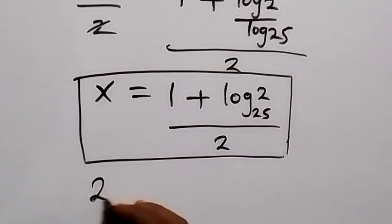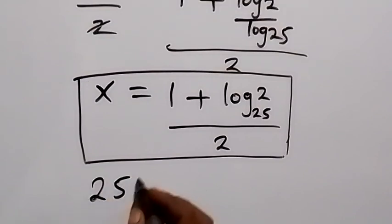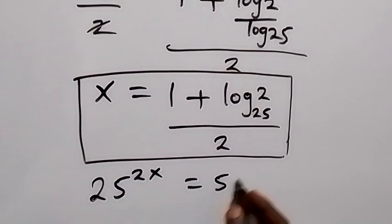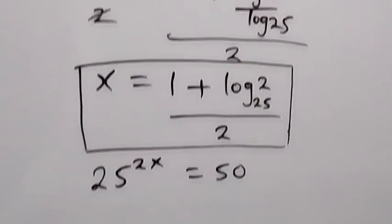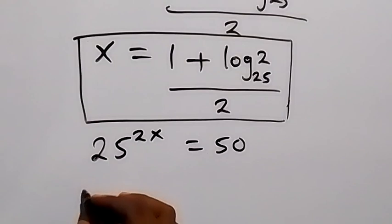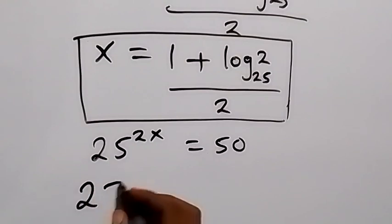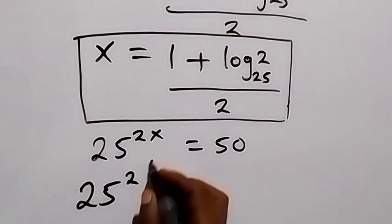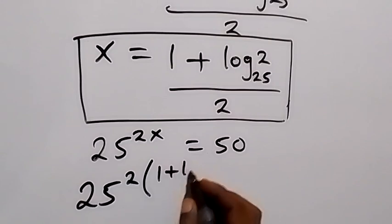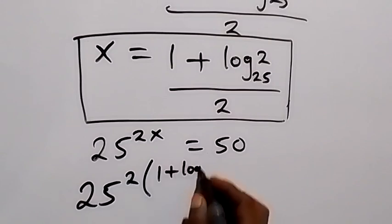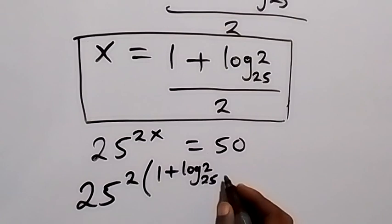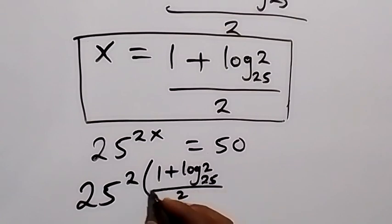To check, from what we are given we have 25 raised to power 2x equals 50. When we substitute the value of x, this will become 25 raised to power 2 multiplied by 1 plus log base 25 of 2, then all over 2.